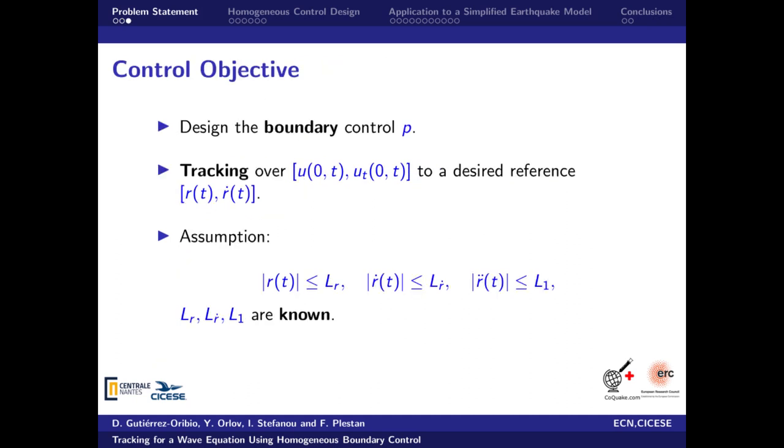The control objective in our work is to design the control input p to perform tracking over the displacement and velocity at x equal to 0. The desired reference is assumed to fulfill these conditions with a priori known bounds.